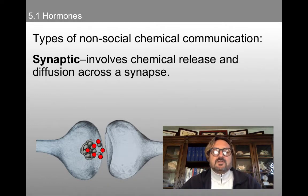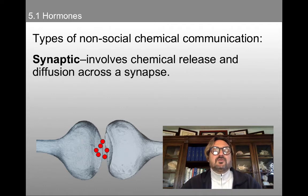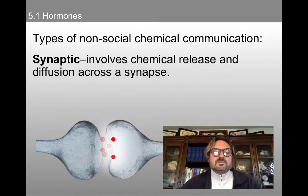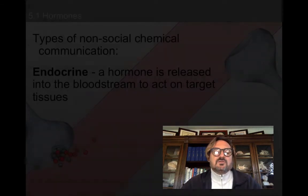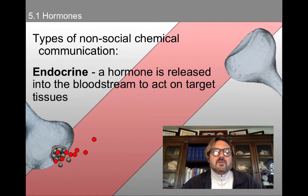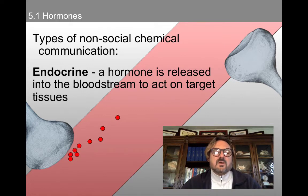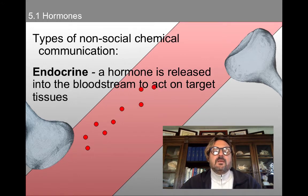The non-social chemical communication starts with synaptic, which you're familiar with. Synaptic communication involves chemical release and diffusion across the synapse — the neurotransmitter travels from the presynaptic to the postsynaptic membrane where it causes action or graded potentials. Endocrine communication is communication in which a hormone is released into the bloodstream, which acts as sort of a makeshift synapse — larger, albeit — and then it acts upon a target tissue that's downstream.